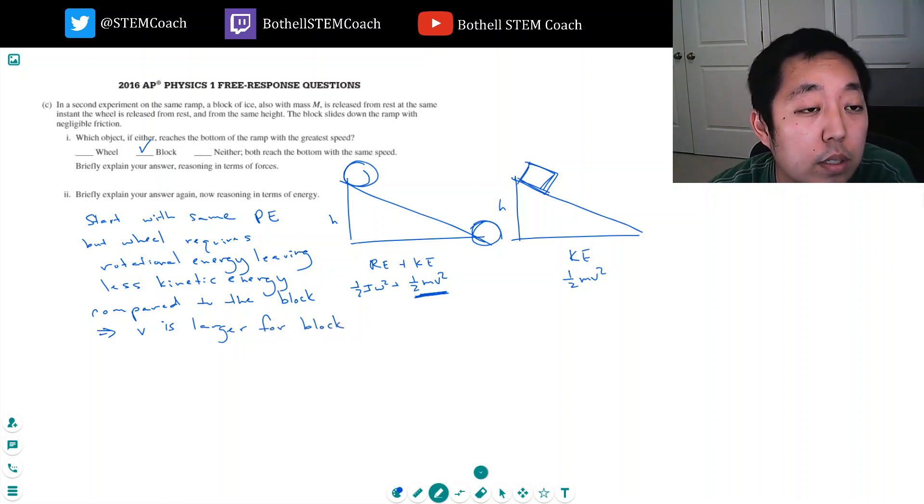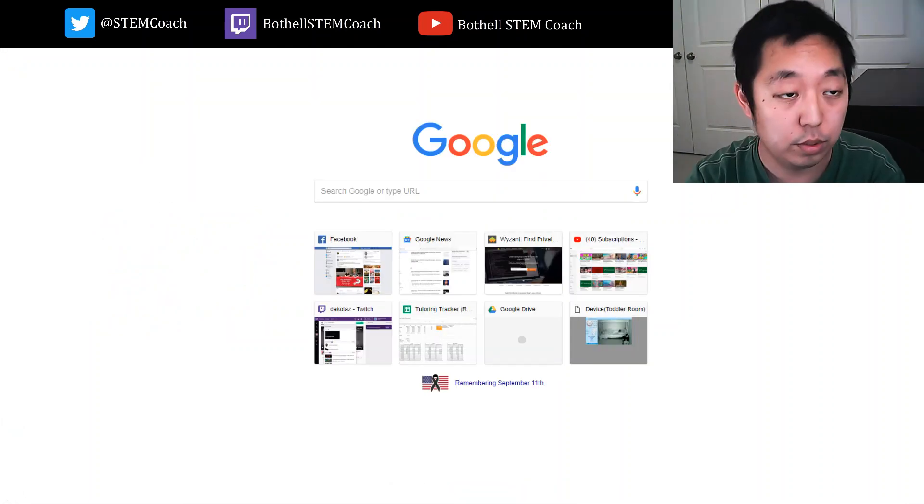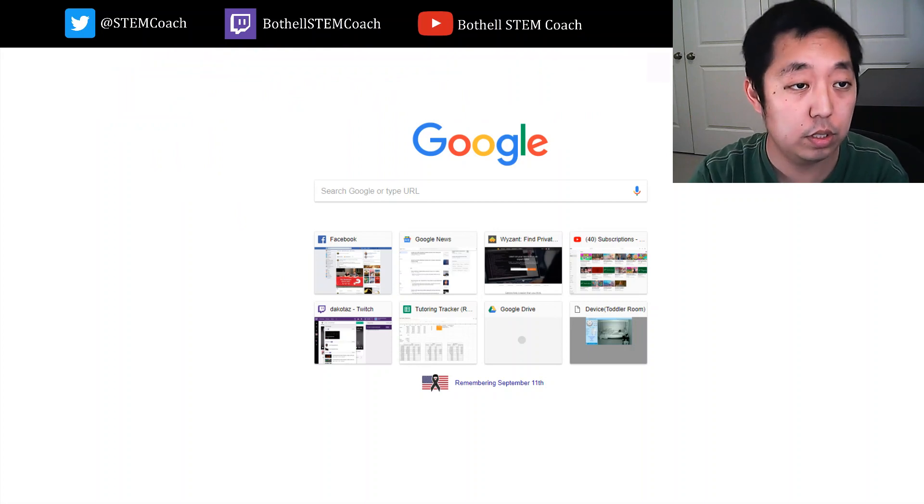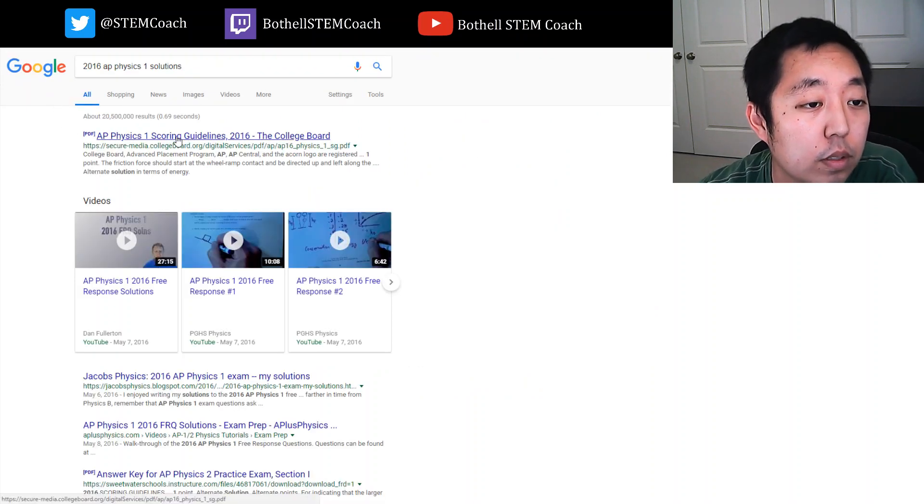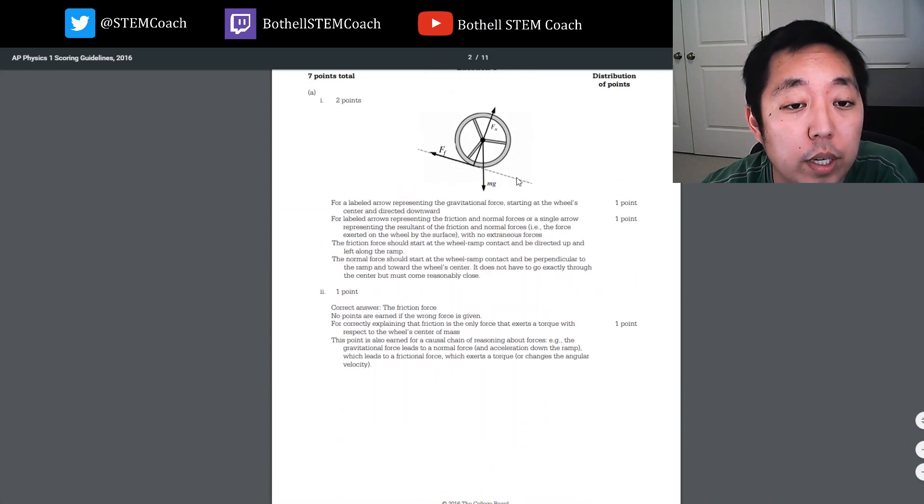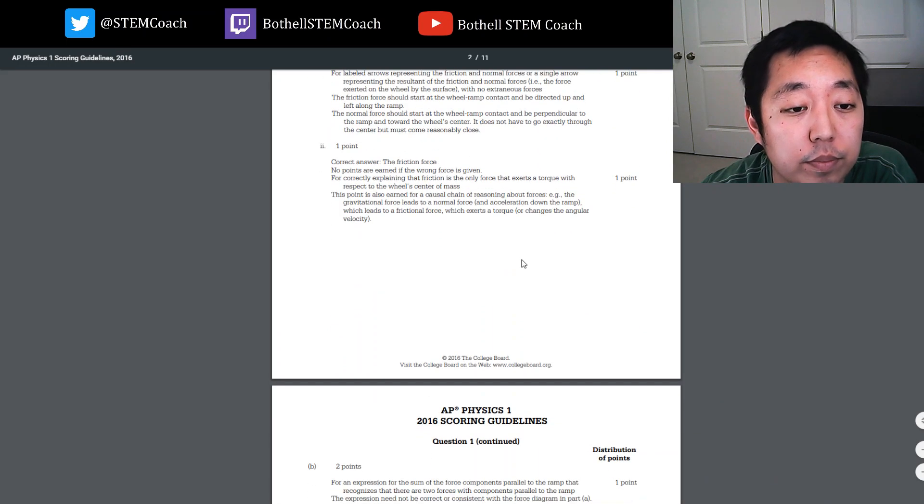Okay. I forgot to pull up the 2016 AP Physics 1 solutions. So let's look at them. Okay. We got the normal force acting here. We got gravity acting here and the force of friction acting there. Good. Friction force.